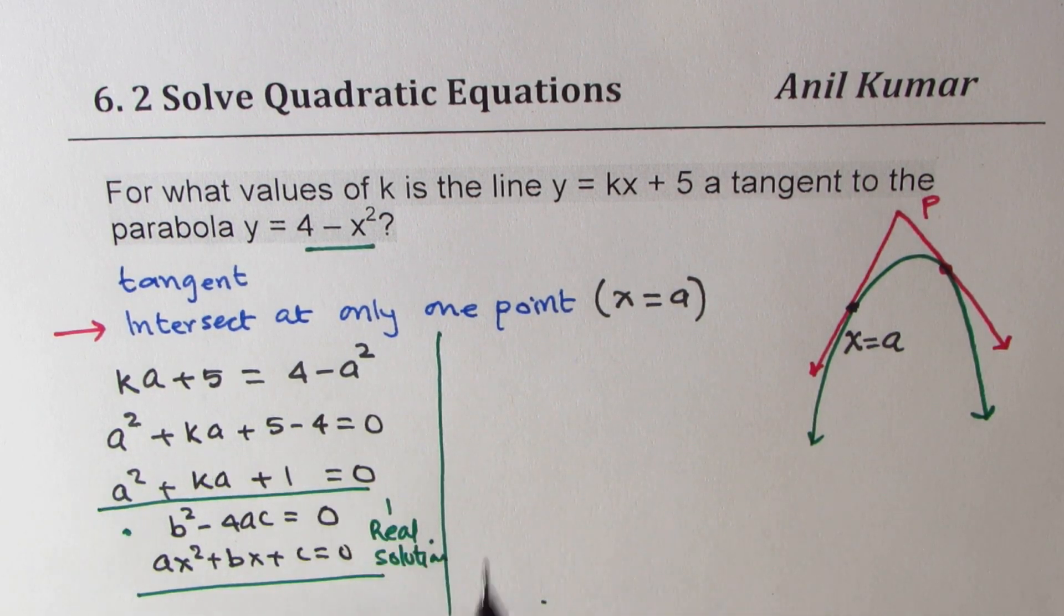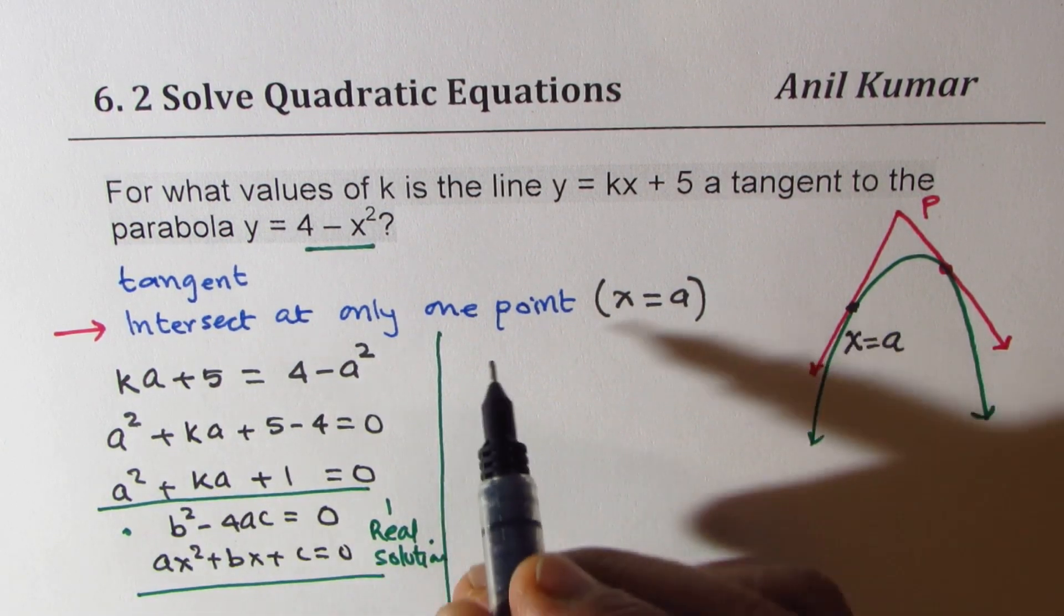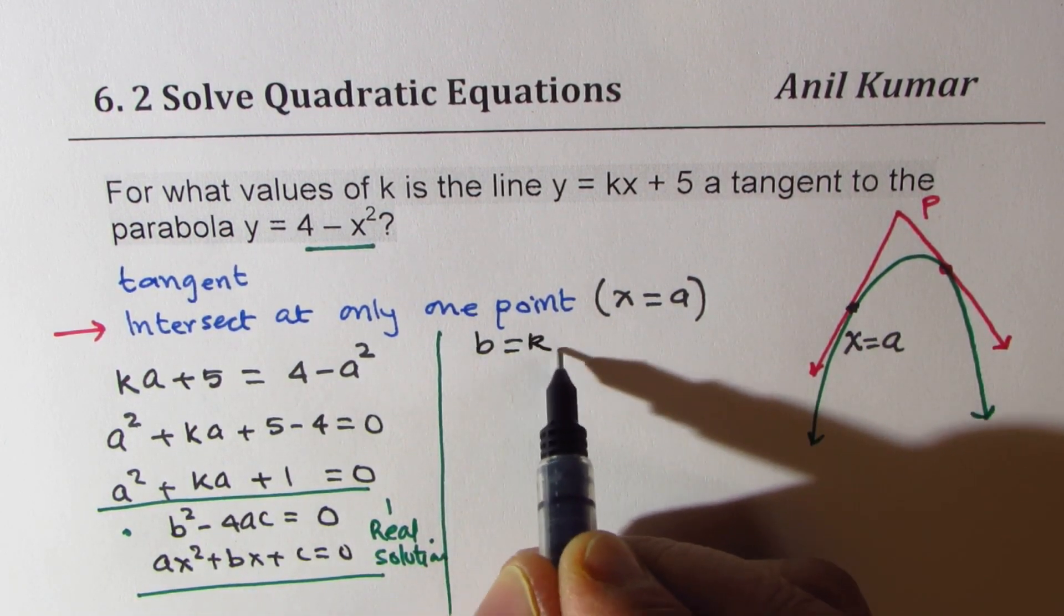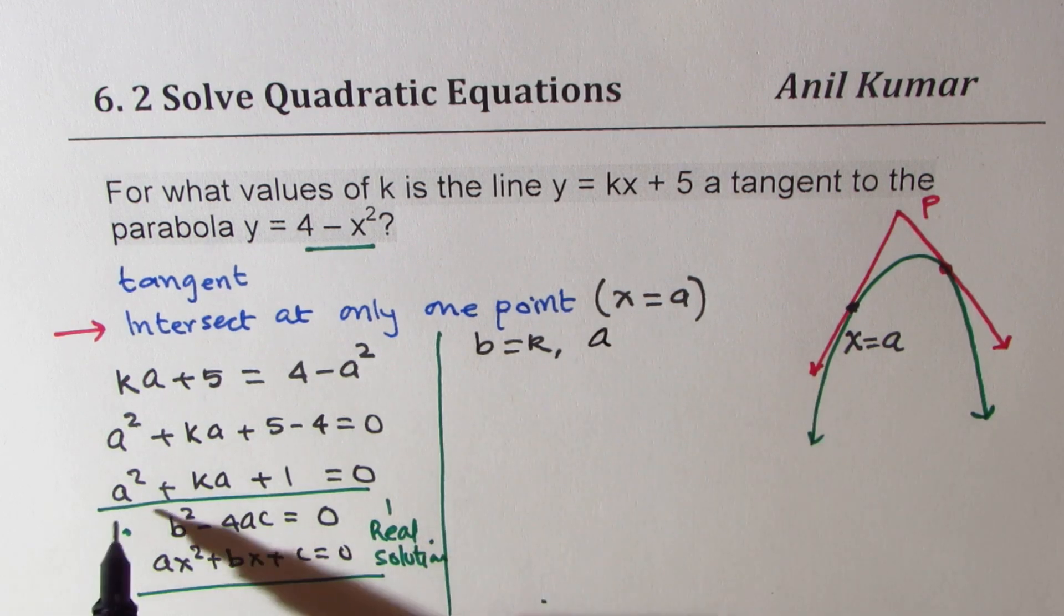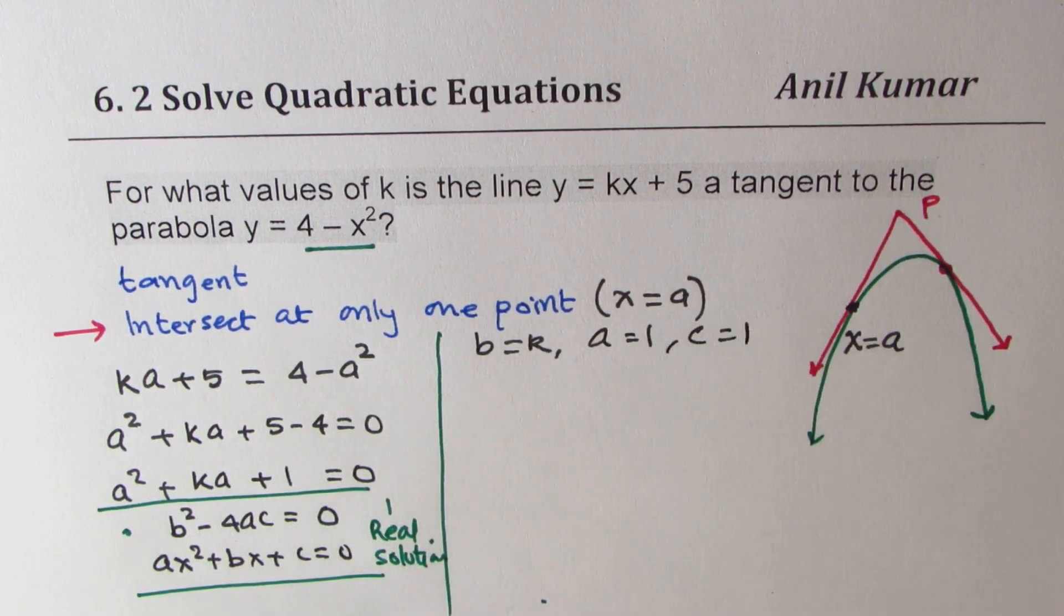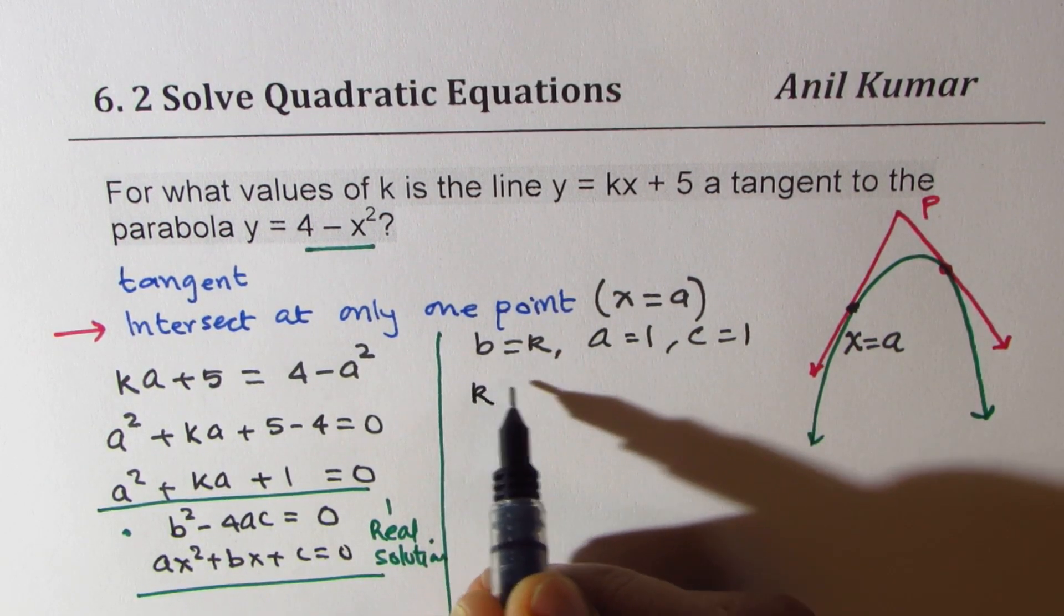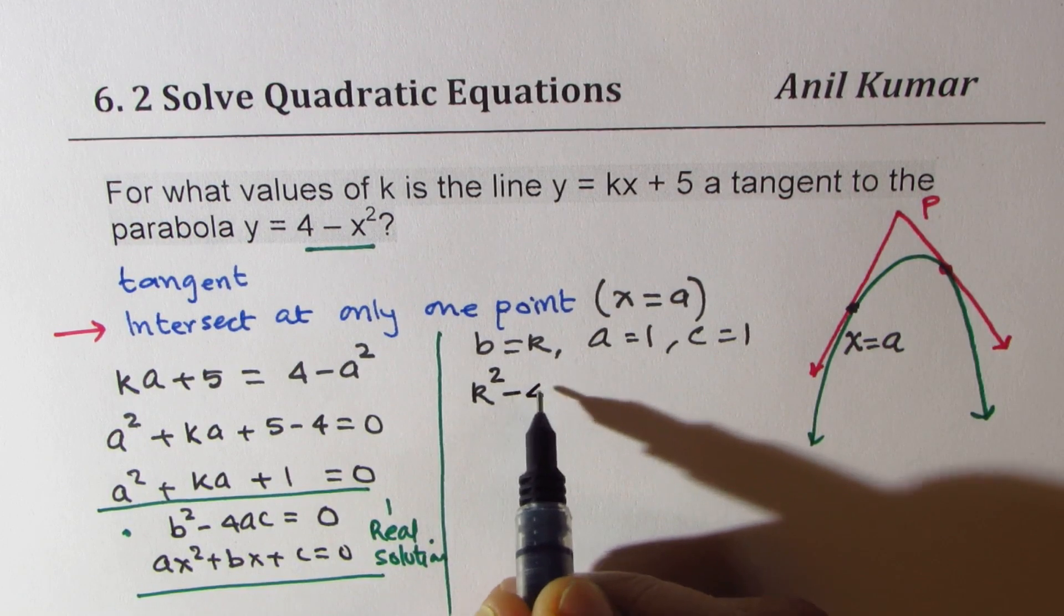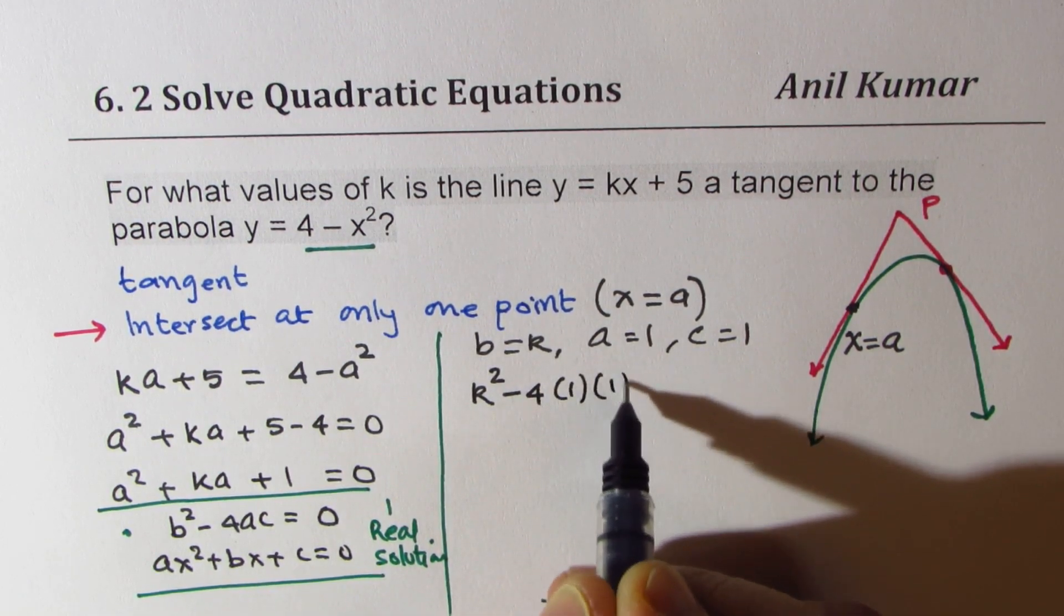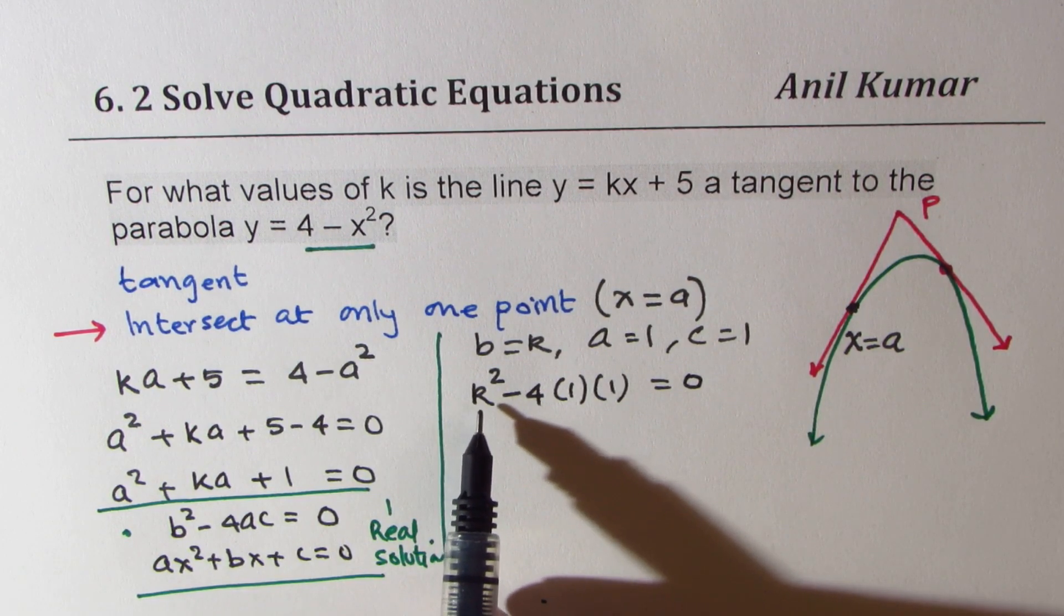In our case, b is k. The value of b is k. The value of a, coefficient of a², is 1 and the constant c is 1. So, equating b² - 4ac, that means k² - 4(1)(1) = 0, will give us the possible values of k.